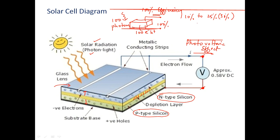If you are able to obtain a solar efficiency above 25 percent, that particular solar cell is extremely efficient. The cost of a solar cell also increases with respect to its efficiency — lower efficiency means lower cost, higher efficiency means higher cost.